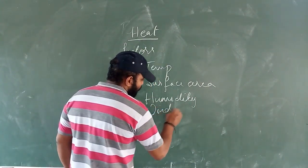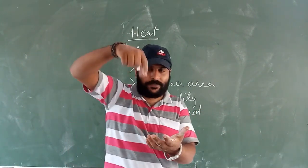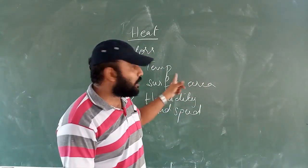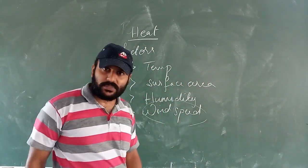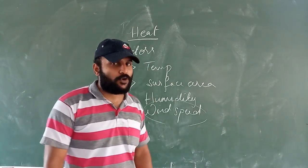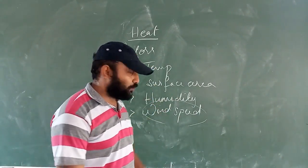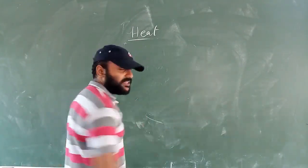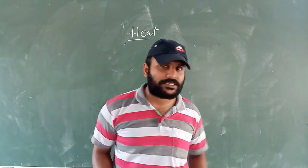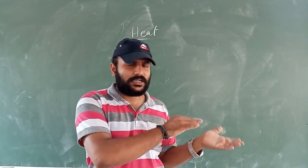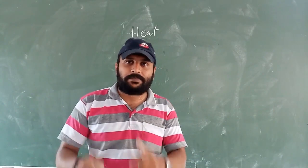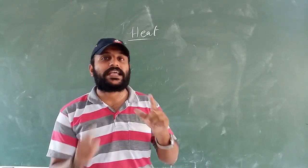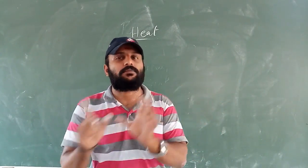Fourth factor is wind speed. As seen in the petri dish example, the spirit under the fan disappeared — evaporation depends on wind speed. So the four factors are: temperature, surface area, humidity, and wind speed. The difference between evaporation and boiling: both involve change of phase from liquid to gas, but evaporation takes place at any temperature while boiling takes place at constant temperature.